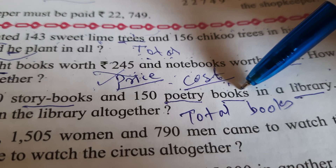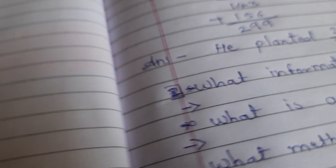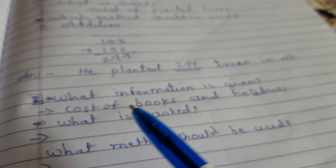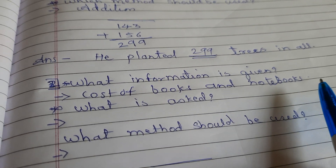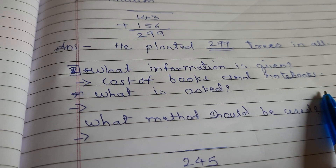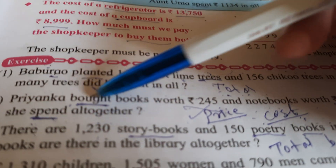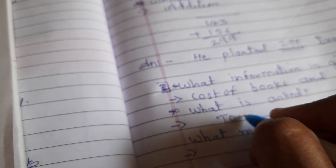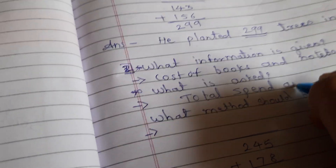The cost or price of the books and notebooks are given. So we have to write: cost of books and notebooks. Now what is asked? How much she spent altogether — so we have to write: total spent amount.